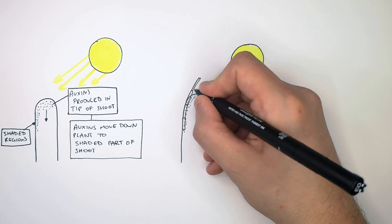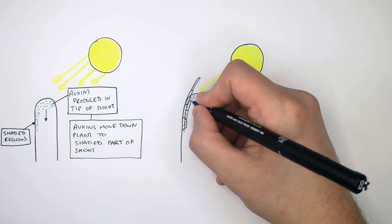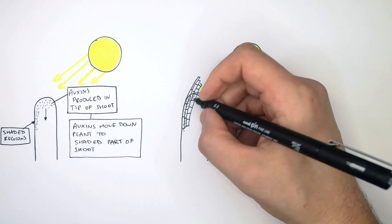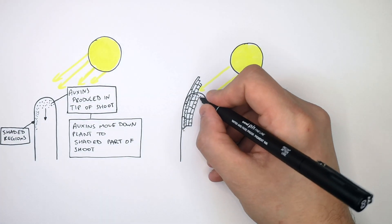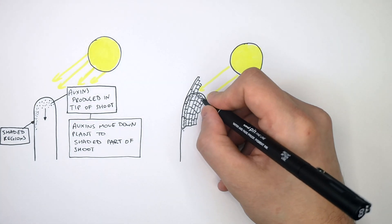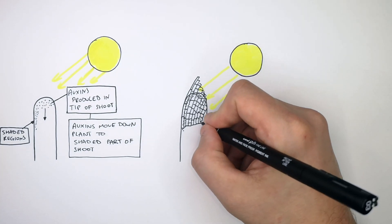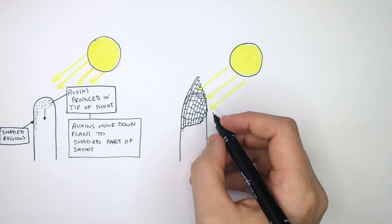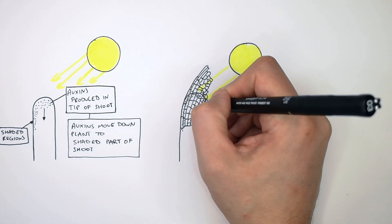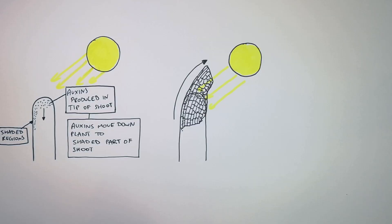The auxins cause the plant cells to elongate more quickly. So the rear side of the shoot — its cells are going to grow more quickly — and where there are no auxins, they're going to grow more slowly. This causes a bending of the shoot towards the light. The faster one side of the shoot grows, the more the shoot bends towards the light.